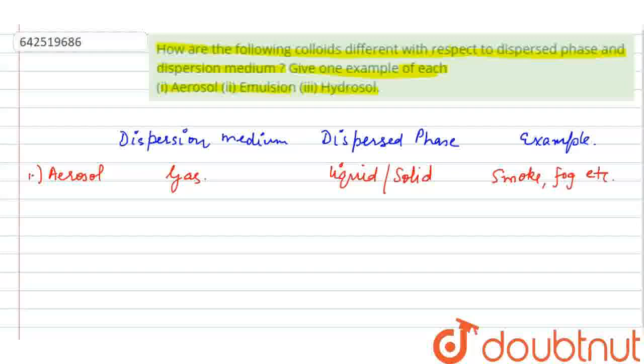Second is emulsion. In emulsion, the dispersion medium is liquid and the dispersed phase is also liquid. An example for emulsion is milk or hair cream.